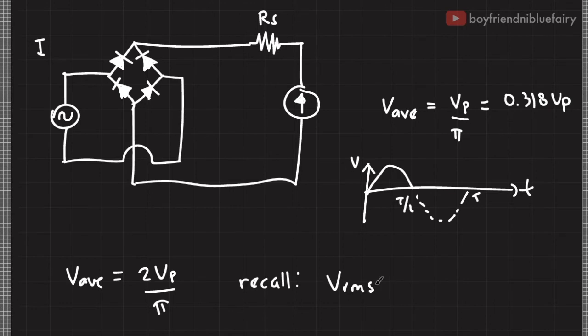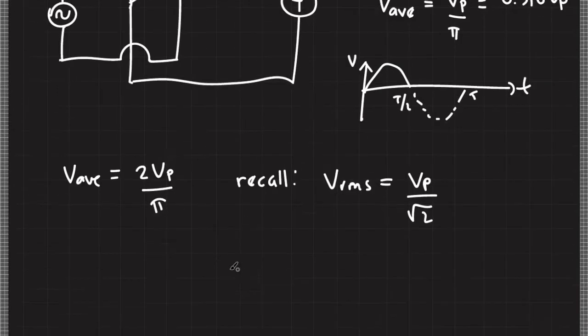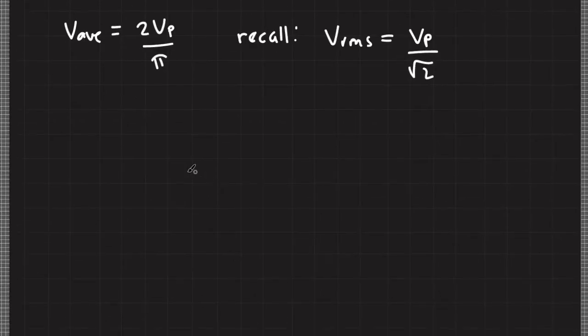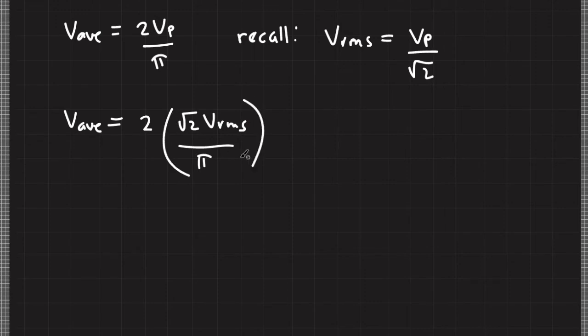So I'll have V average equals 2 times this expression. Recall that the relationship between root mean squared voltage and the peak voltage is Vrms equals Vt over square root of 2. So if I plug this equation here, I'll end up with V average equals 2 times square root of 2 Vrms over pi. Therefore, the average voltage read by the galvanometer is 0.90 Vrms.